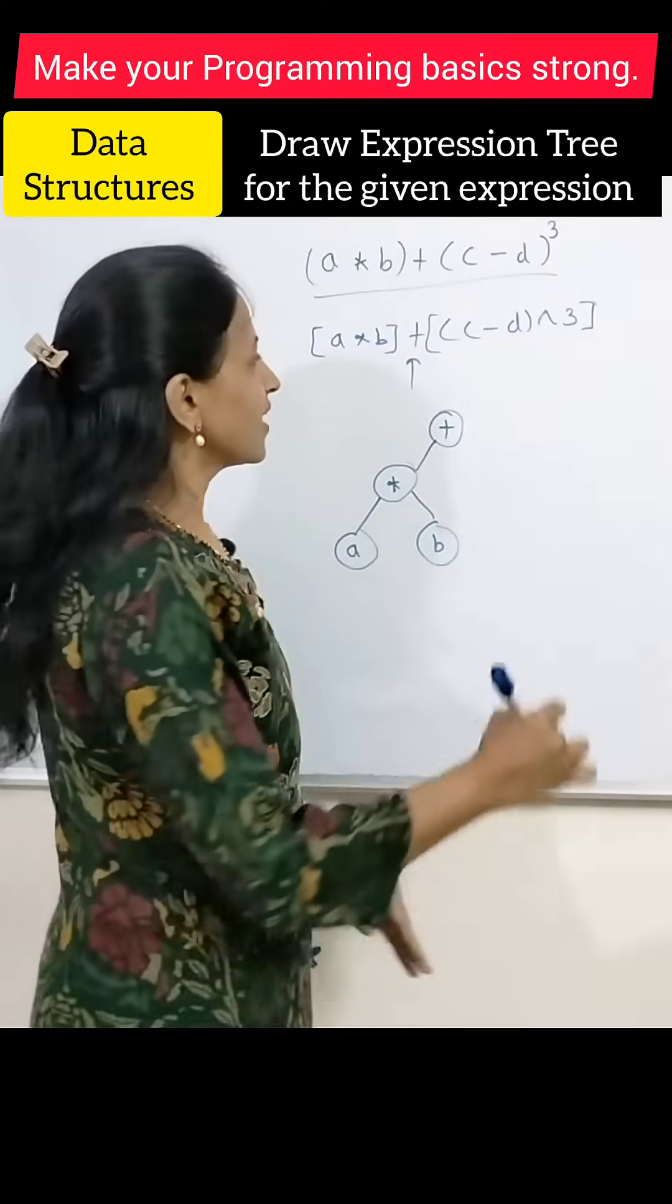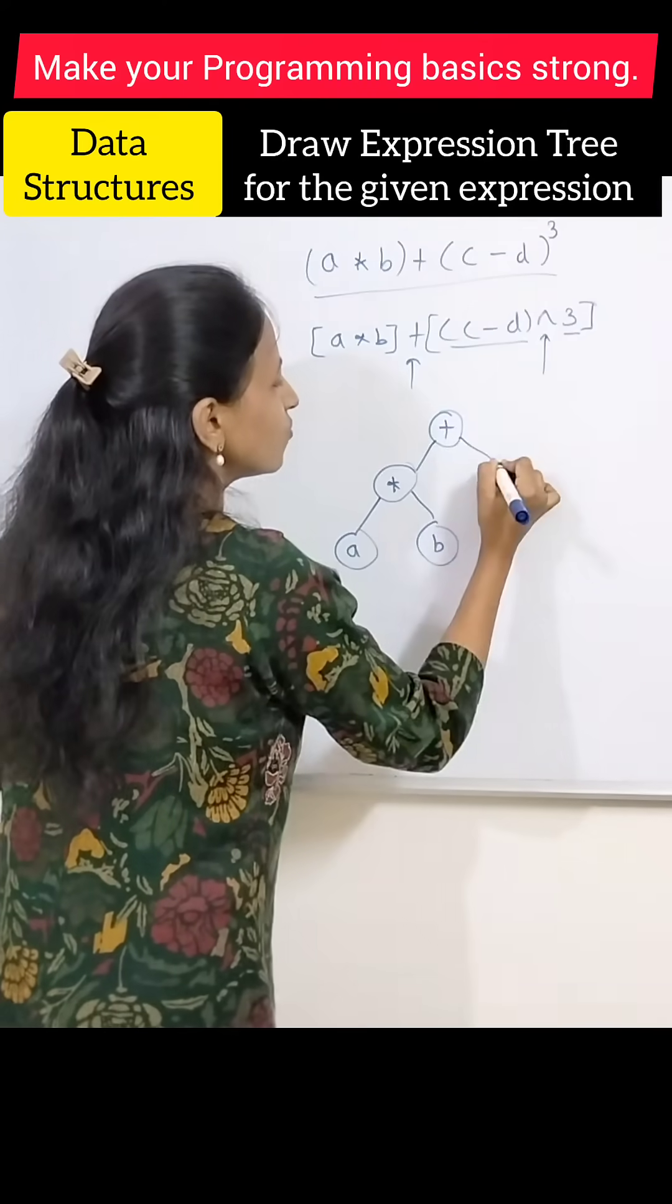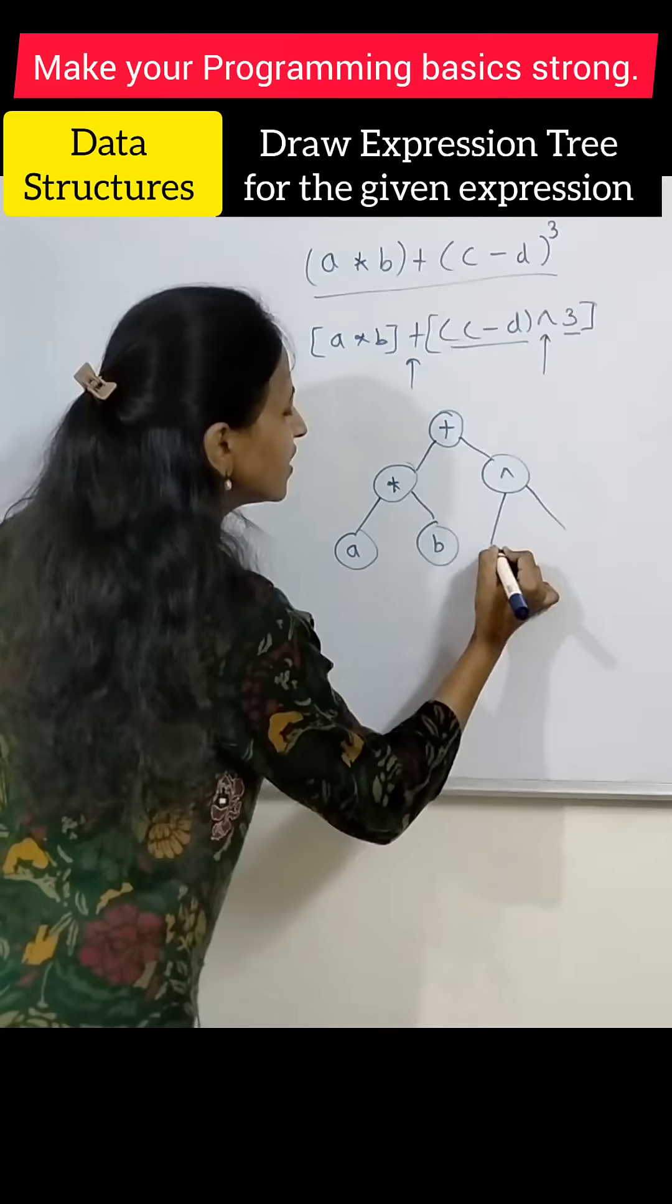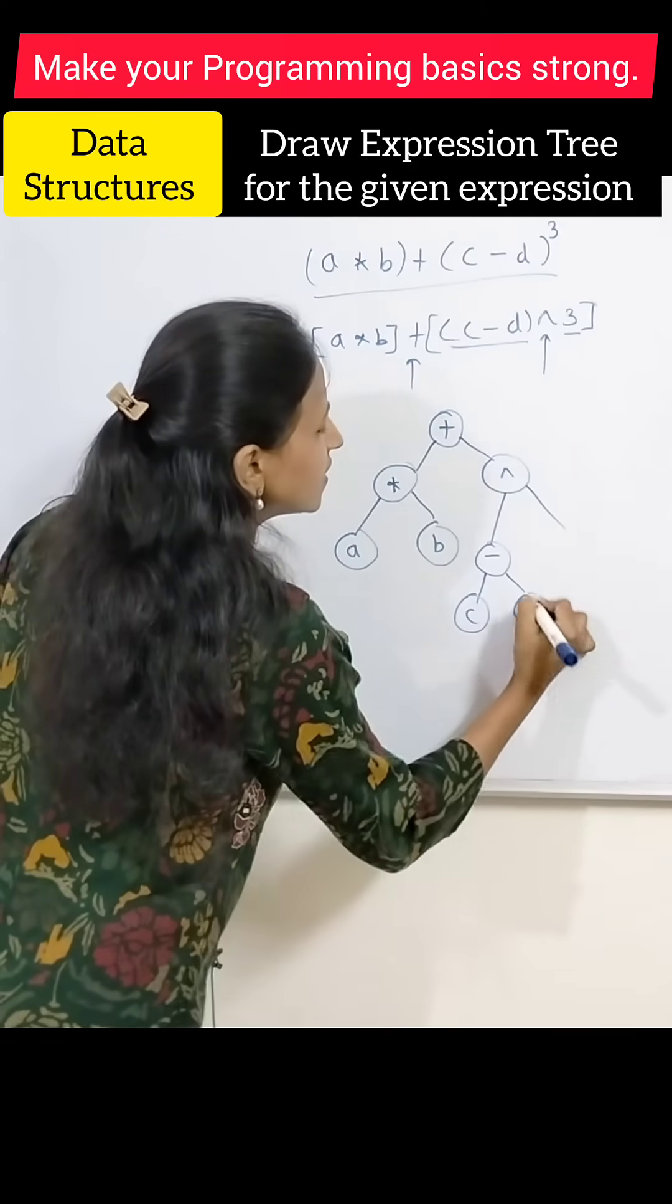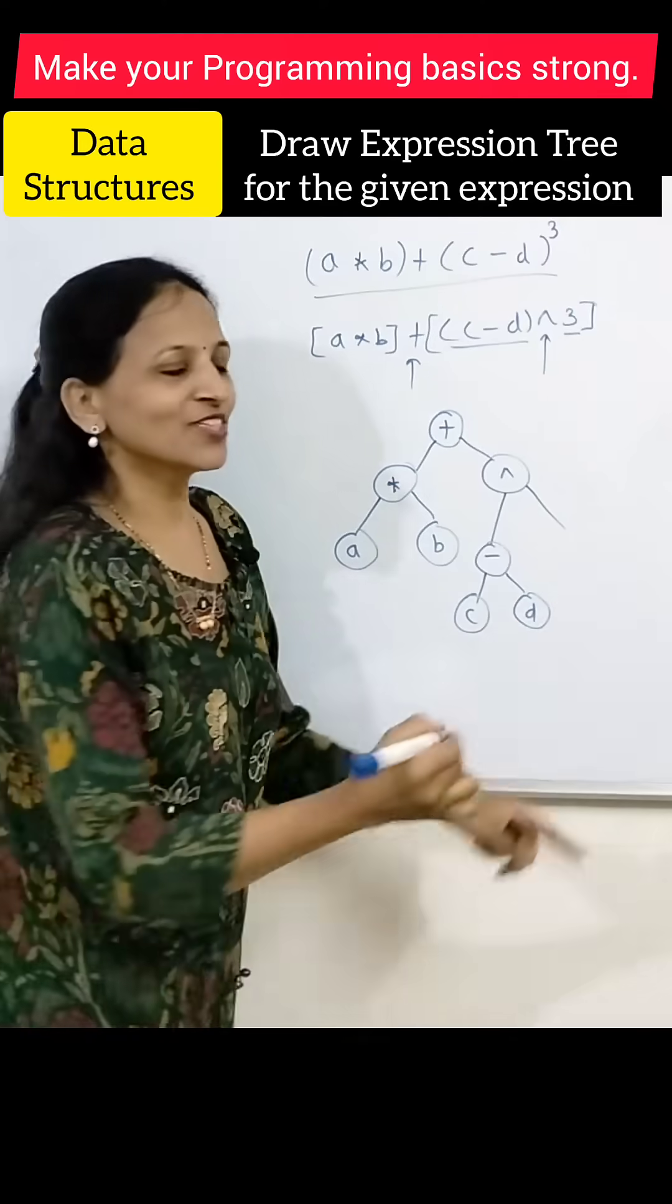For this, we have to draw the tree. Convert it like this: c minus d and raise to 3.